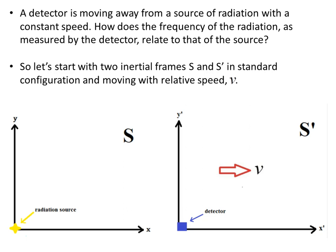We have a detector that is moving away from a source of radiation with constant speed. What we want to know is how the frequency of the radiation, as measured by the detector, relates to that of the source.